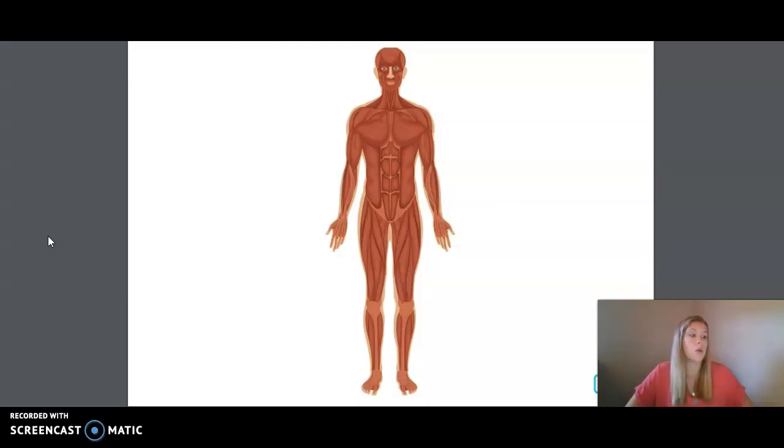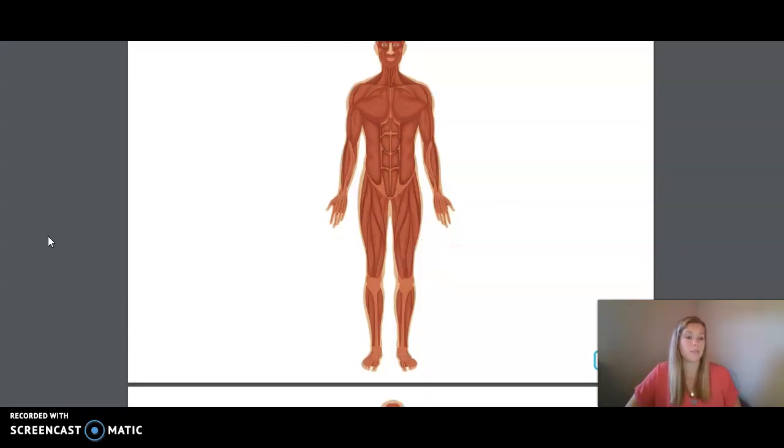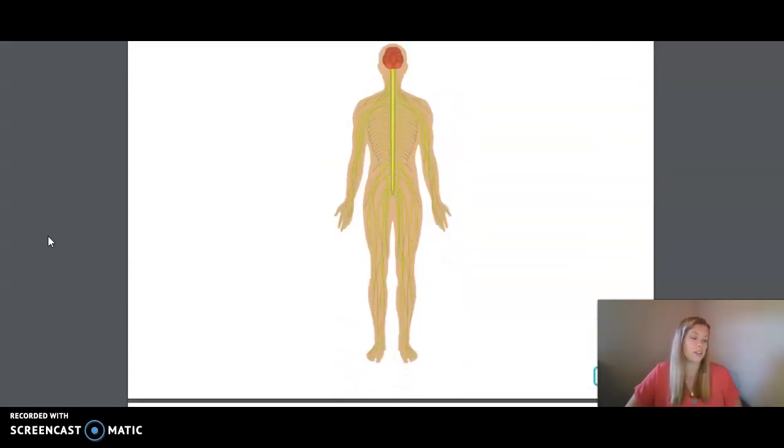Here's the next riddle. Without me, you would not be able to feel, see, or hear. I control your senses by sending messages to my command center, the brain. What system am I? The nervous system is your body's communicator. It tells your body what to do. Nerves run throughout your body from head to toe like a giant road system. Nerves send messages up and down your spine to your brain. The nervous system controls your muscles, telling them how to move. It also helps all your other systems do their jobs.